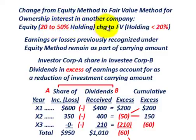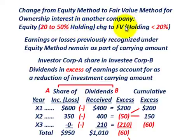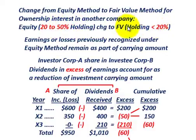They're going to change to the fair value method because Corporation A's holding interest in Corporation B has gone down. For whatever reason, it's gone down and their holding interest is now less than 20%. So they're going to have to convert from the equity method to the fair value method because their holding interest decreased from over 20% to less than 20%.